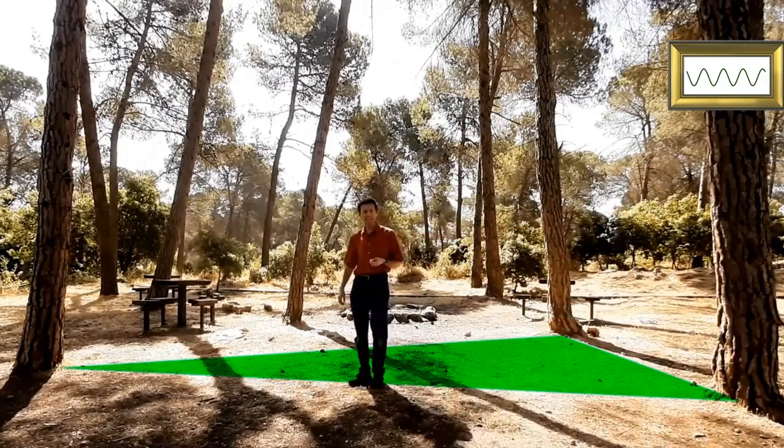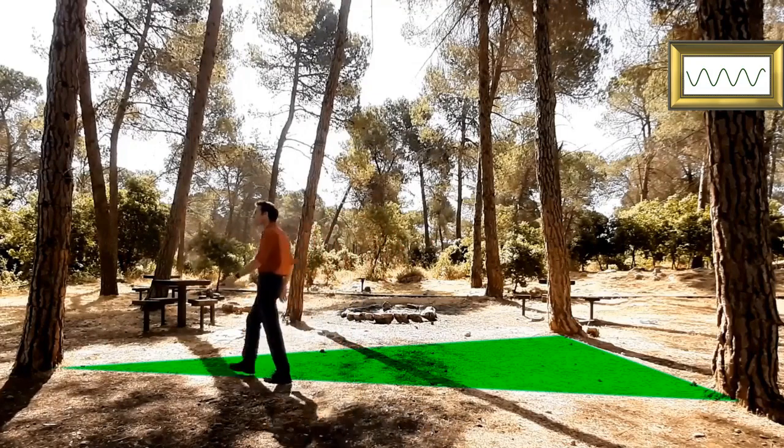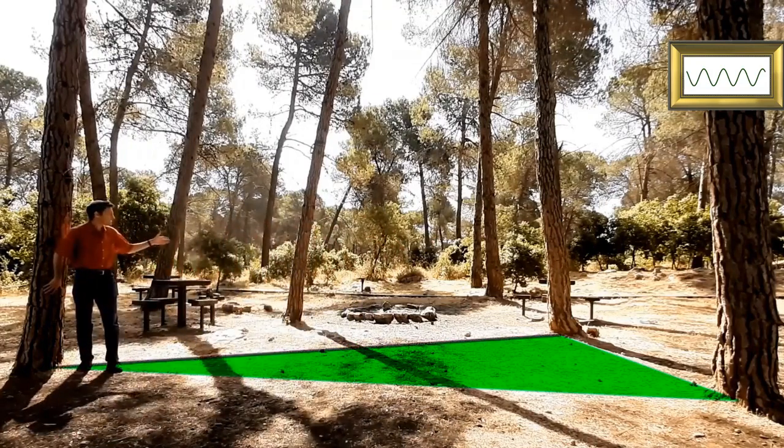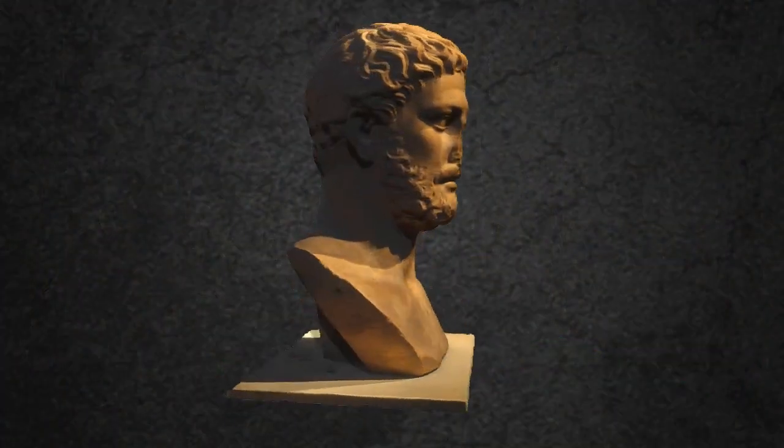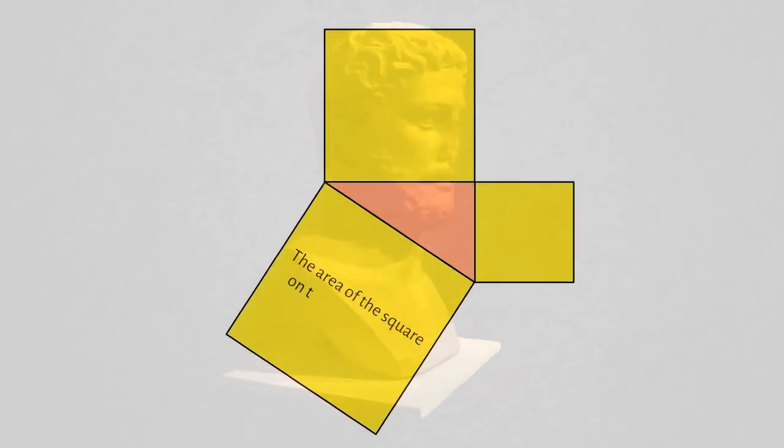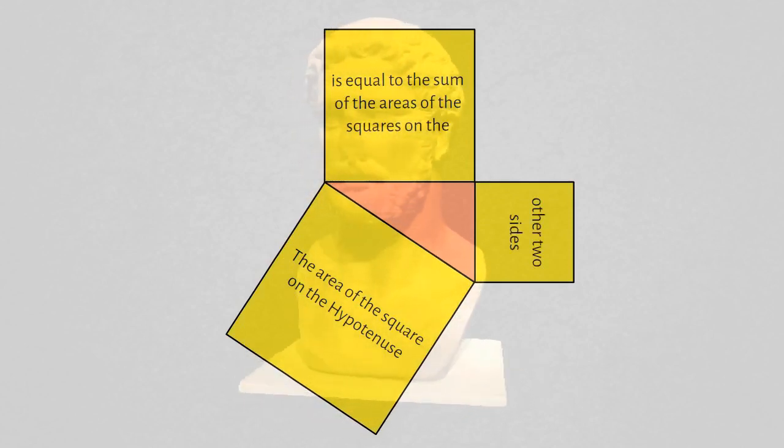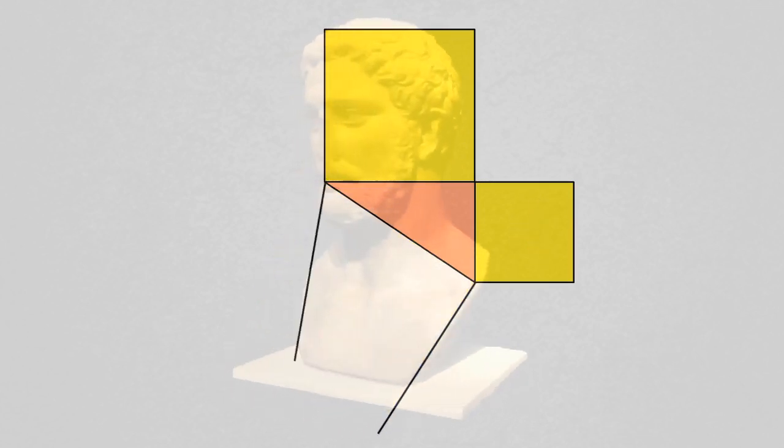But how can we calculate the distance along the hypotenuse of a triangle, when all we know are the lengths of its base and its height. Pythagoras taught us that if we draw squares on the three sides of the triangle, then the area of the square on the hypotenuse is equal to the sum of the areas of the squares on the other two sides. And if we know the area of the square on the hypotenuse, we can work out its length by taking the square root.